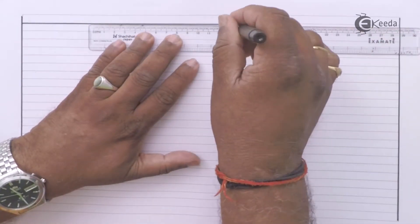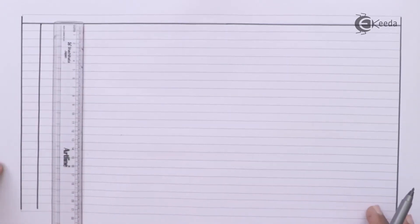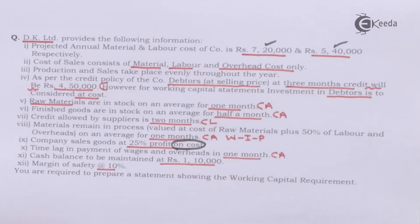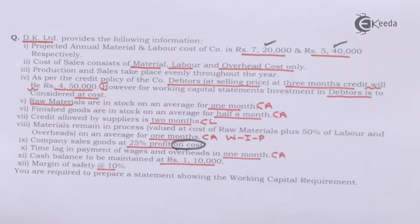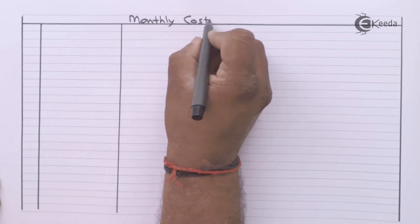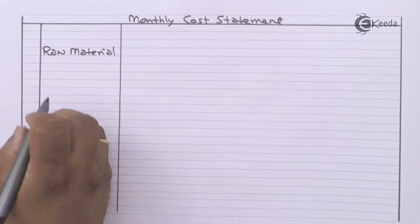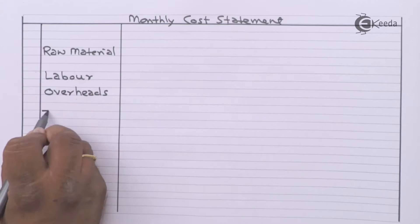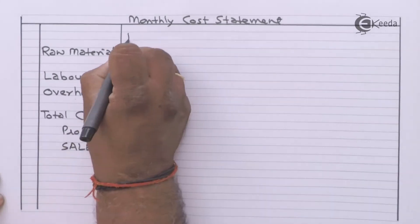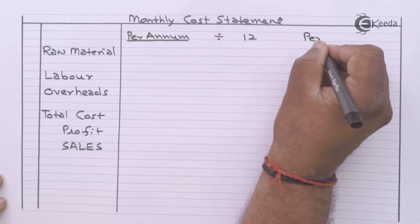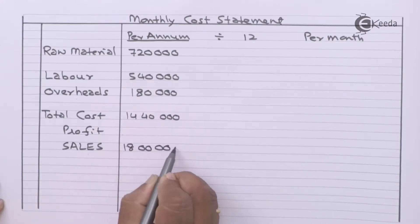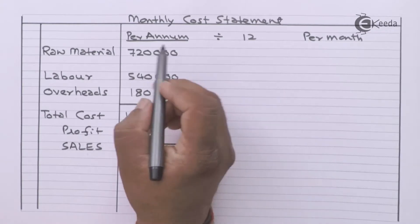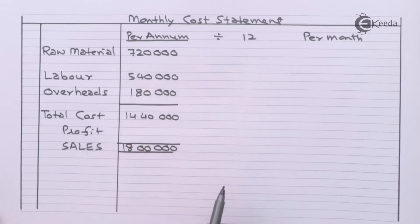We have not been given the amount of overheads. Most of the working capital information is on a monthly basis — raw material for one month, finished goods half month — therefore we will convert annual data into monthly data. We will divide each figure by twelve to get per month details.